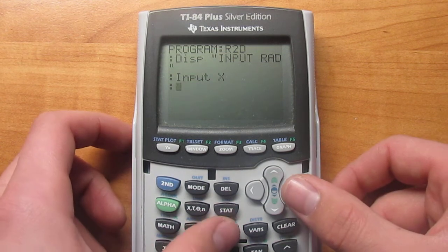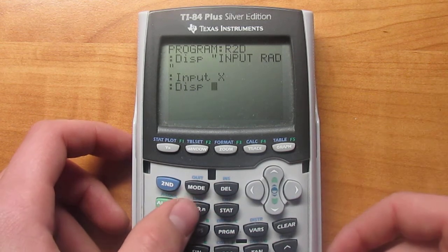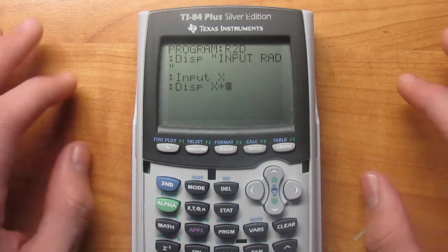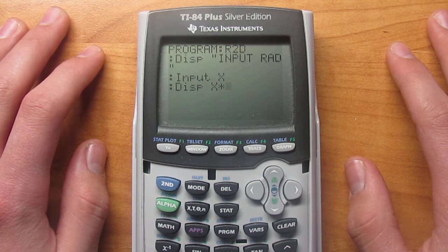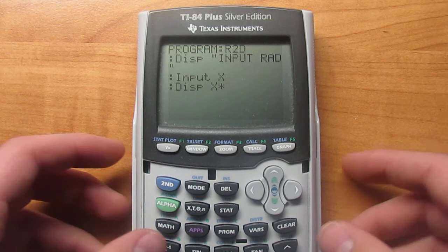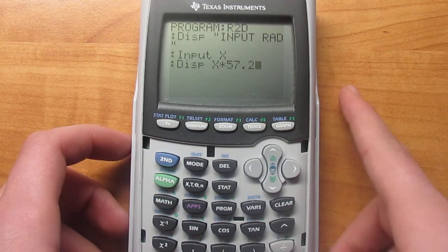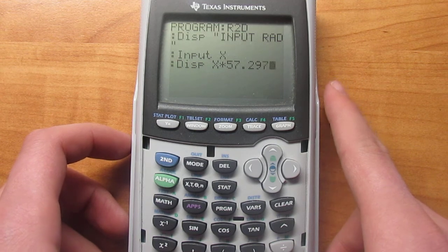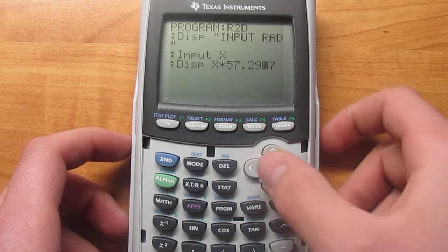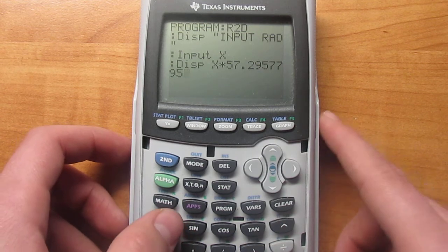And then hit program, right, display. X times. Now some teachers use 57.3, but if your teacher didn't specify, you can just use the more exact number. Which is 57.2957795. And then hit enter.